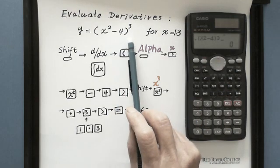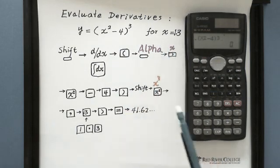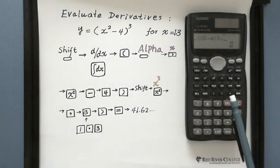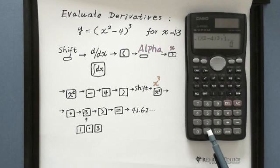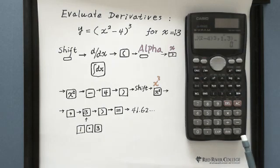After entering this function, because we evaluate when x equals 1.3, we put the comma and 1.3. So comma 1.3 and 1.3 and close brackets, and then hit the equal sign.